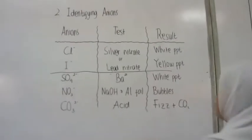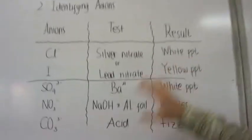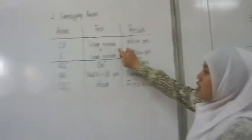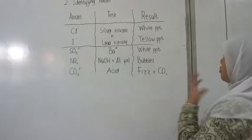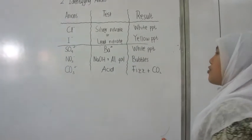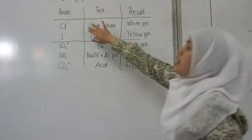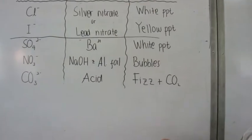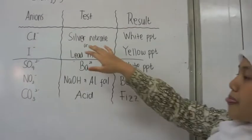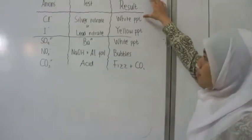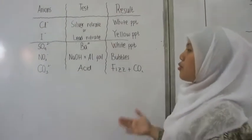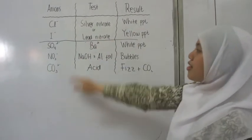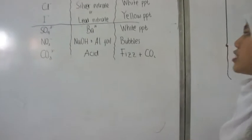I also have made a table for identifying anions, but this time we only have five ions and they use different tests, different reagents, and different results. For chloride and iodide, we can use either silver nitrate or lead nitrate. For chloride, with either silver or lead, it will form a white precipitation, and for iodide, it will form a blue precipitation.